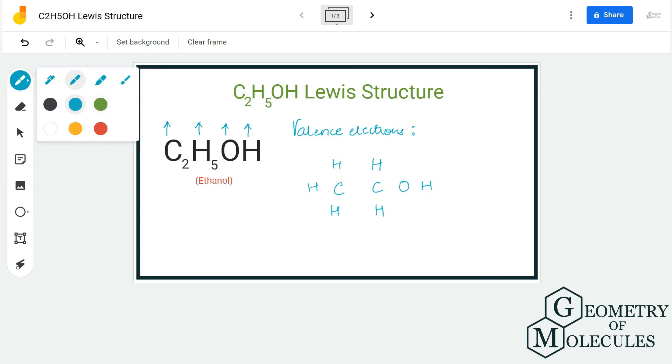So we have two atoms of carbon, which means we have eight valence electrons. As we have two atoms of carbon, we have eight valence electrons from carbon. We have five hydrogen atoms, which means we have five valence electrons from hydrogen.